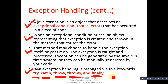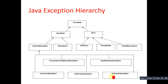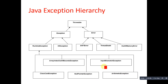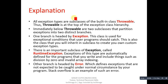You can see the Java exception hierarchy here. The topmost class is Throwable, which is further inherited by the Exception and Error classes. Exception is further inherited by RuntimeException and IOException. RuntimeException is inherited by ArrayIndexOutOfBoundsException, InputMismatchException, ClassCastException, NullPointerException, and ArithmeticException. Error is inherited by AWTError, StackOverflowError, and OutOfMemoryError. This is the complete Java exception hierarchy used to handle exceptions in Java code.